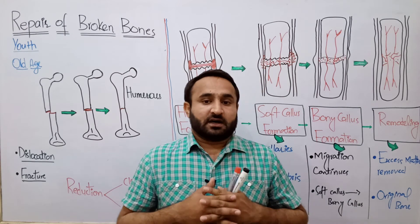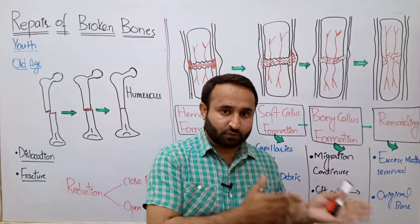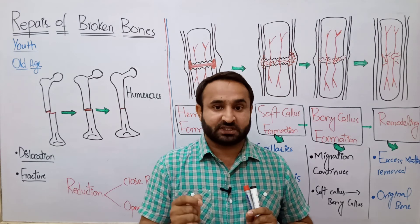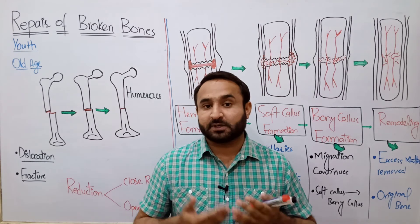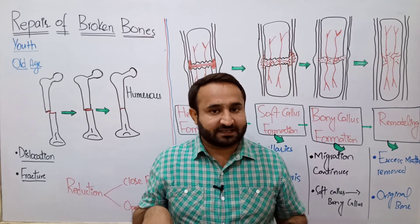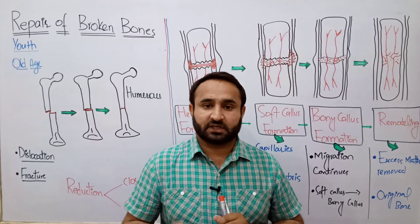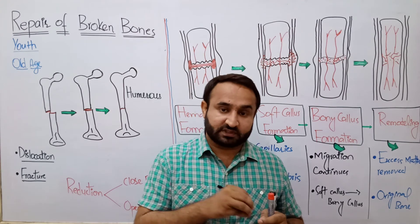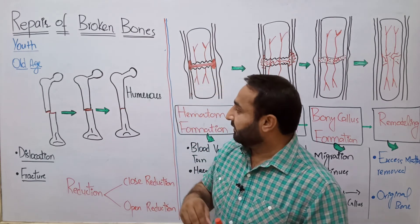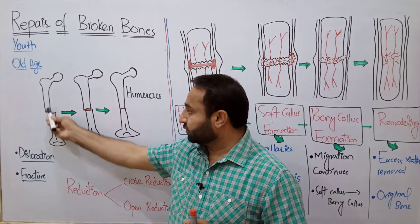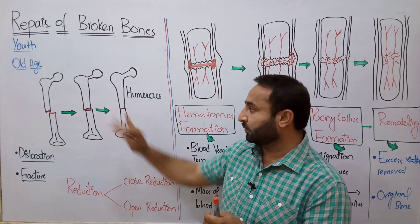Repair takes 8 to 12 weeks — that is 2 to 3 months — but this depends on your age. In old age, repair is slower because blood supply and circulation are slower, and minerals are not deposited as quickly. It also depends on which bone is broken: weight-bearing bones like leg bones take longer to heal. Other bones like hand bones take less time. It also depends on the severity — whether the bone is badly broken or just cracked.